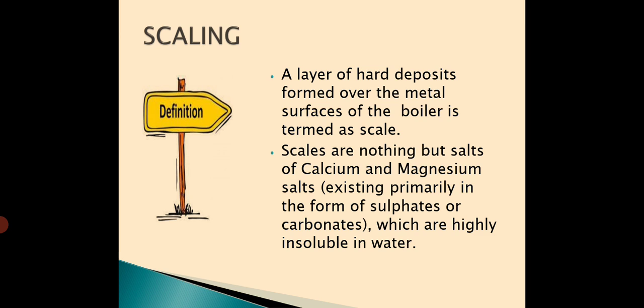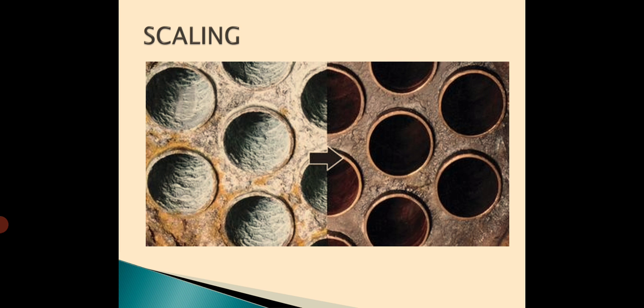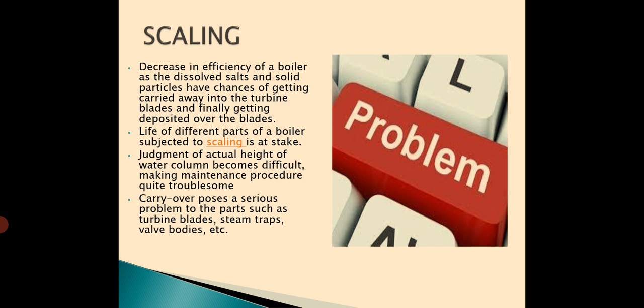What is a scale? A scale is a hard deposit which is formed over the metal surface of a boiler. These scales are nothing but the salts of calcium and magnesium which exist primarily in the form of sulphates or carbonates which are highly insoluble in water. As they are highly insoluble in water, when the water inside the boiler boils or is converted into steam, these salts get precipitated and get adhered to the surface of the boiler forming hard deposits. In this picture you can see the presence of scales inside the boiler surface.